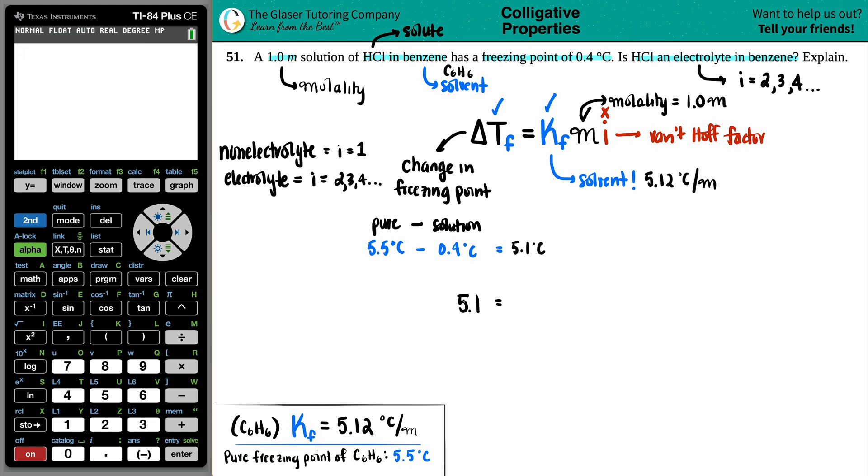Now let's see, we're going to solve for i. 5.1 equals the K value of 5.12 times the molality of 1.0, then solve for X. Ultimately we're just going to divide by 5.12 because anything times 1 is the same number.